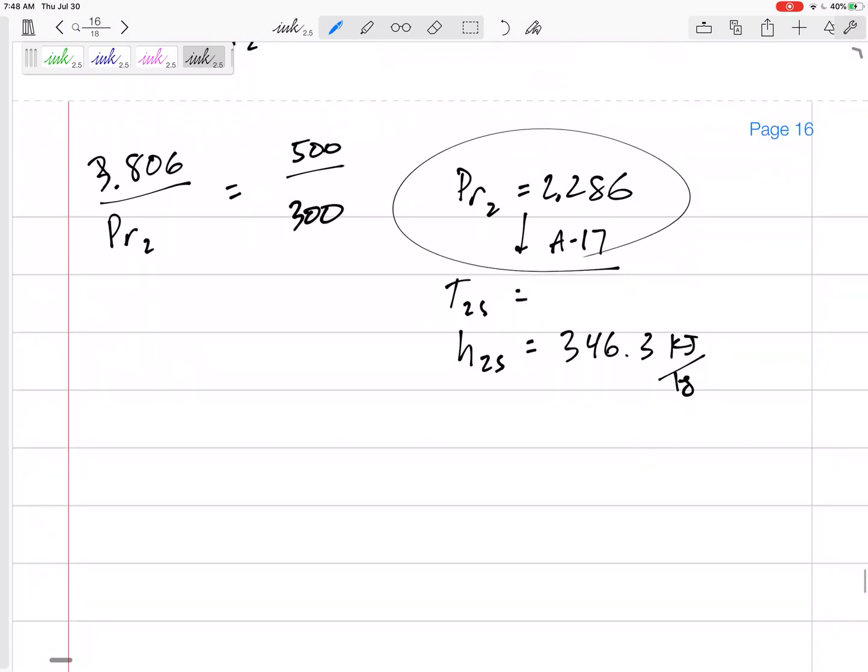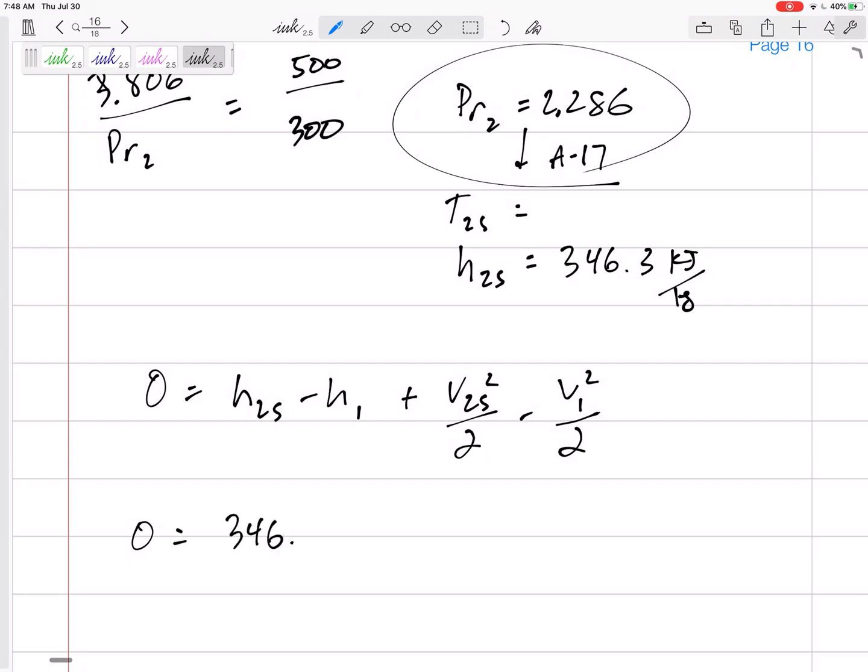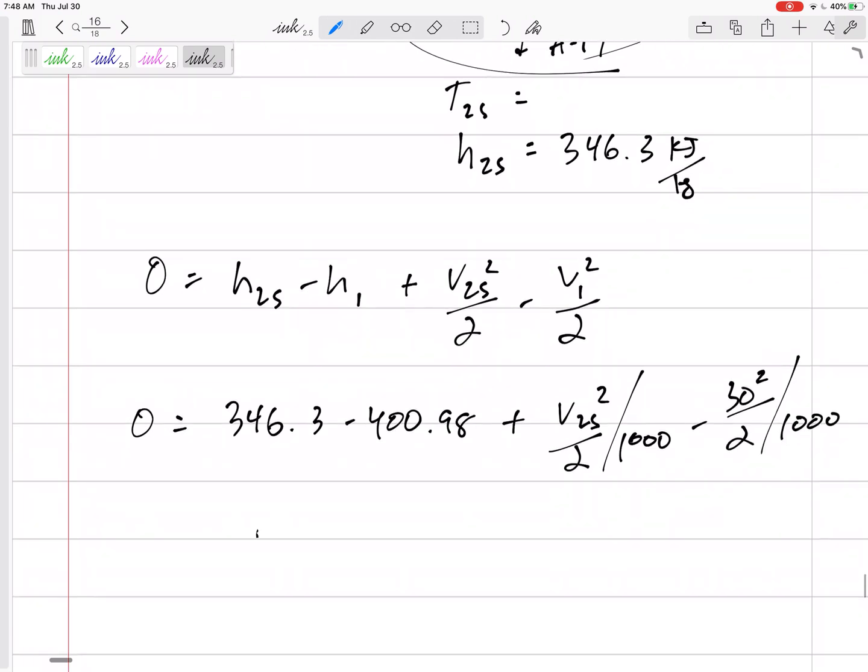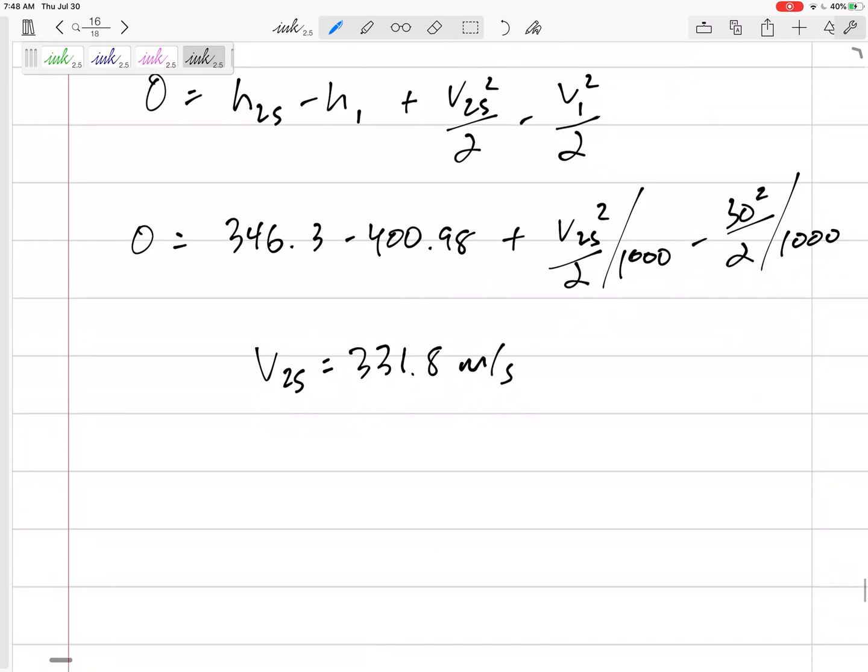Now I can use h2s minus h1 plus v2s squared over 2 minus v1 squared over 2. 346.3 minus my h1 400.98 plus v2s squared over 2 divided by 1000 minus 30 squared over 2 divided by 1000. v2s, almost there, 331.8 meters per second.